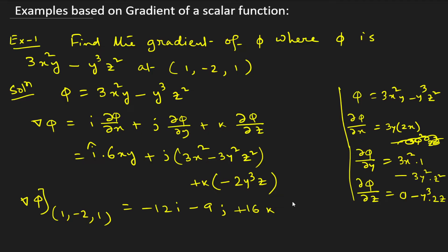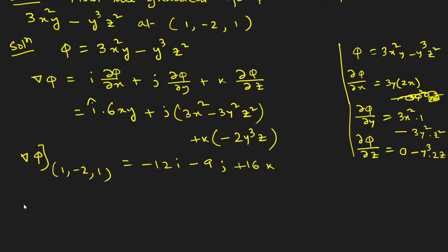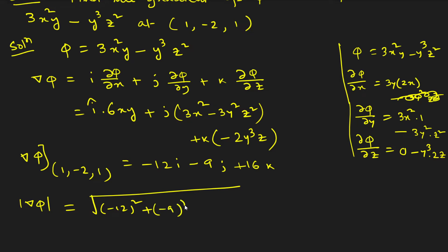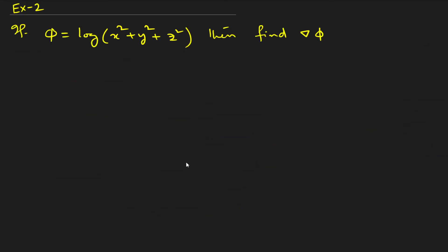In some problems we may be asked to find the magnitude of ∇φ. To do that, we simply find the square root of the sum of squares of the components. In this problem it is not asked, but for reference you would take the square root. This was a very simple problem. Now let us go to the second problem.